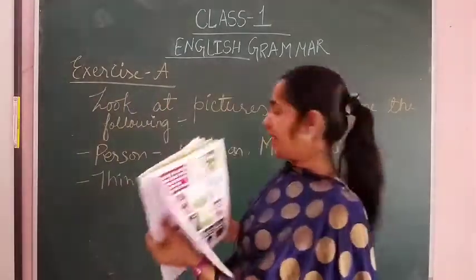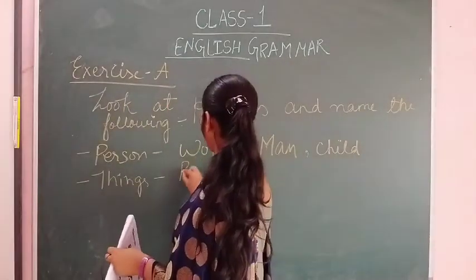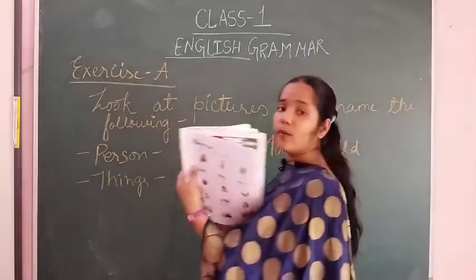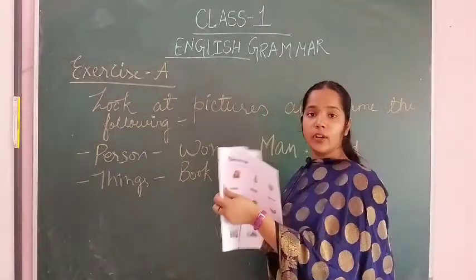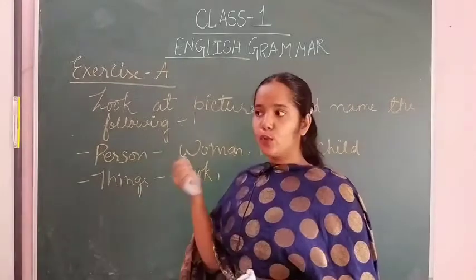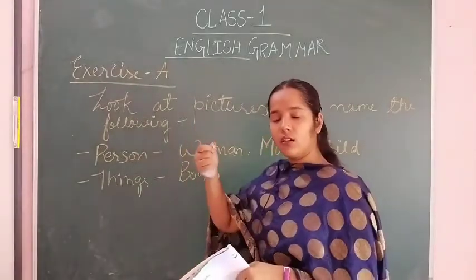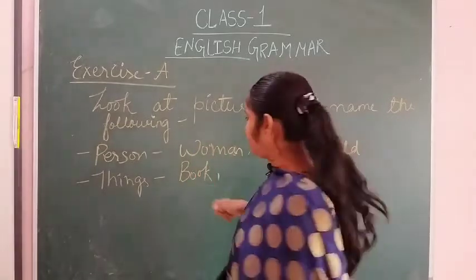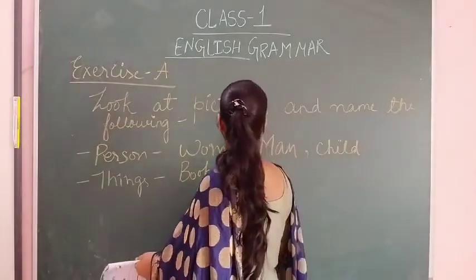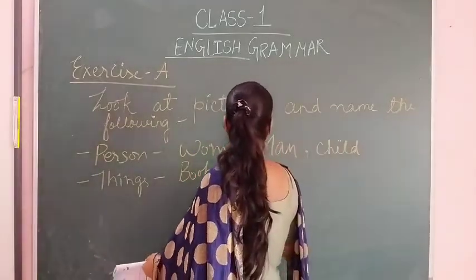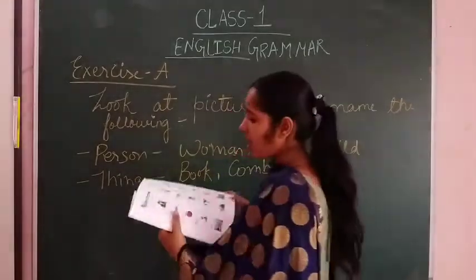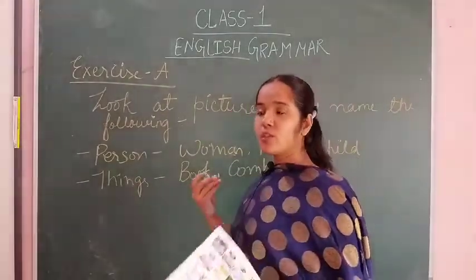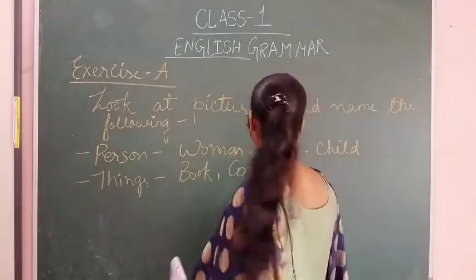First one is book, so we will write book. Second one is comb. What is comb? We use it like a hair comb. Now third one is spoon. We use a spoon to eat something.